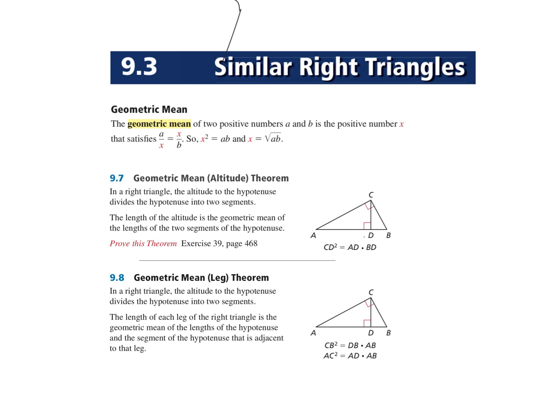Welcome to Similar Right Triangles 9.3. I want to point out a couple really simple things here. Geometric mean: all you're doing is multiplying two numbers together, and then you take the square root. That's all you have to do to find the geometric mean.